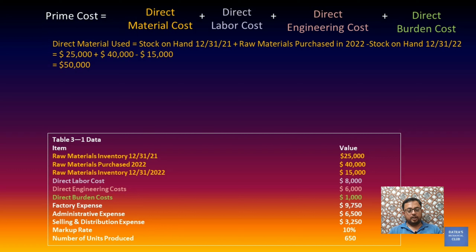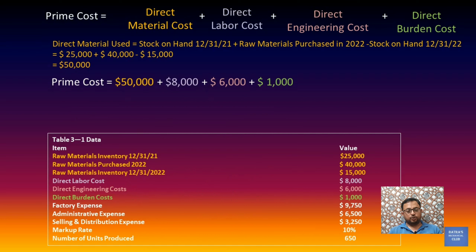Prime cost is the sum of direct material cost, direct labor cost, direct engineering cost, and other burden cost. Direct labor cost is given in the table, direct engineering cost is $6,000, and other burden cost is $1,000. Adding all of these together, we get a prime cost of $65,000.